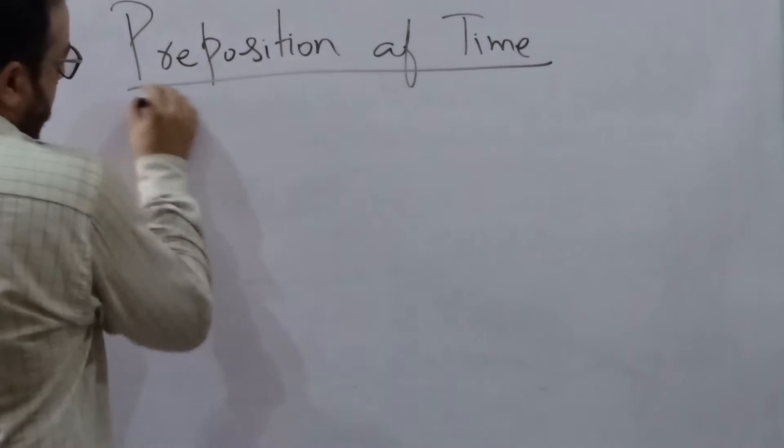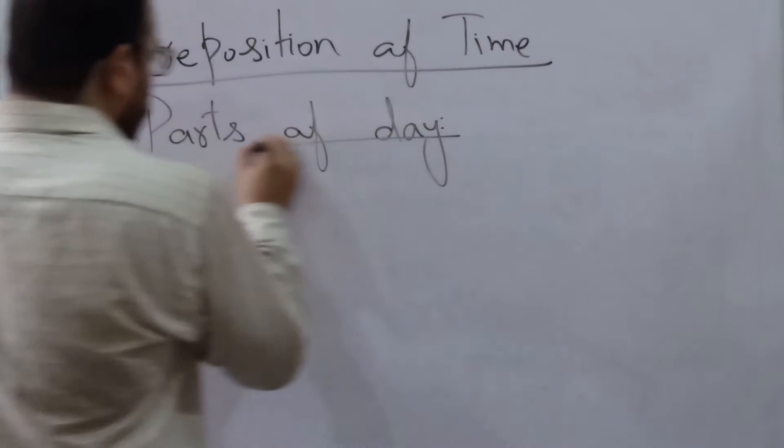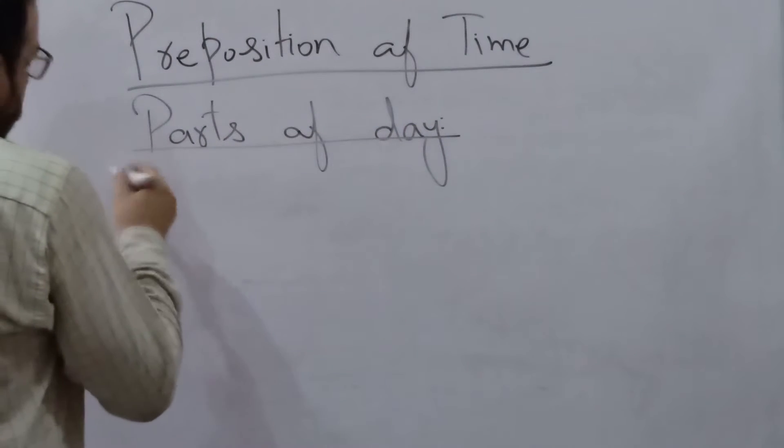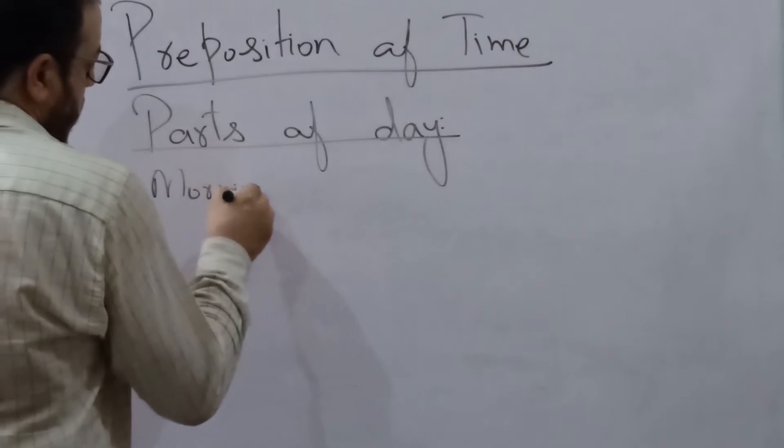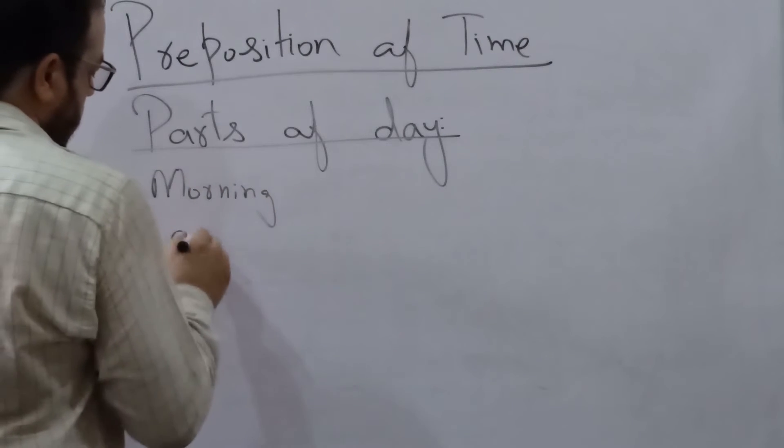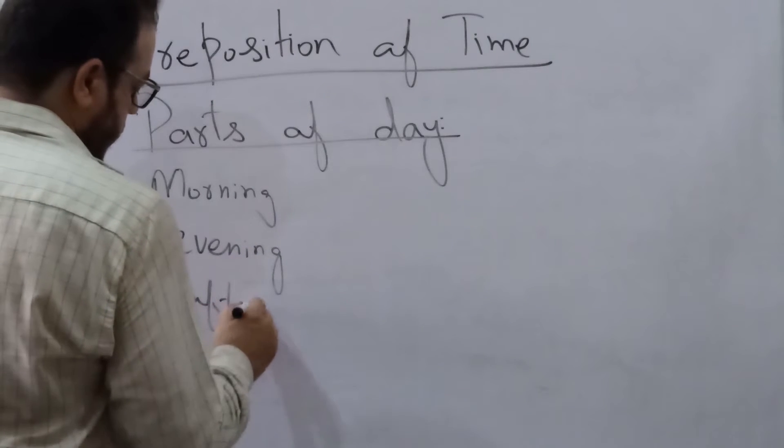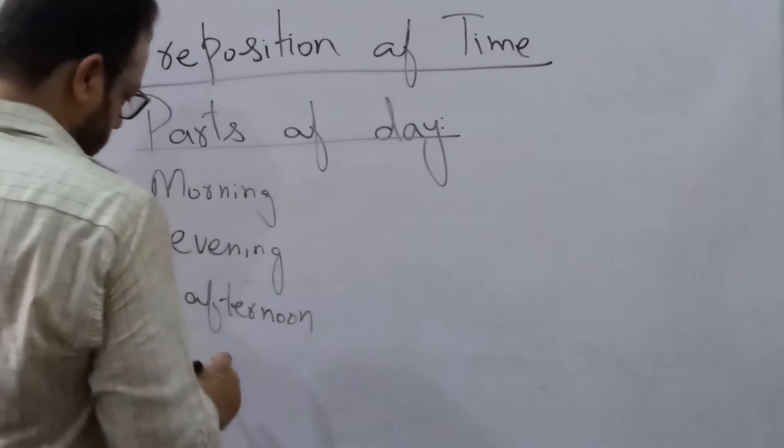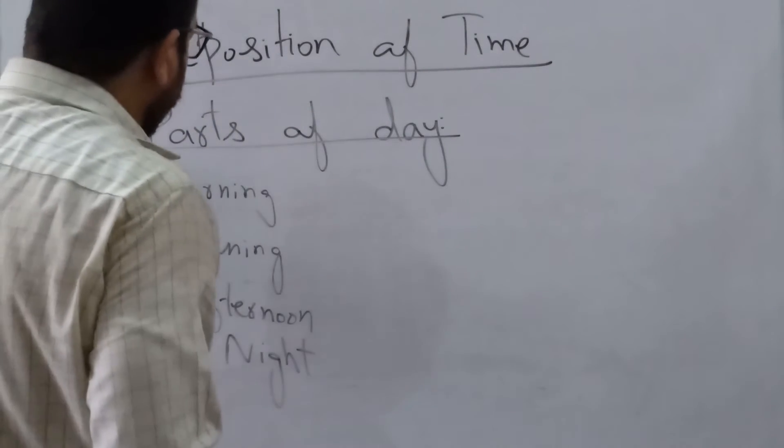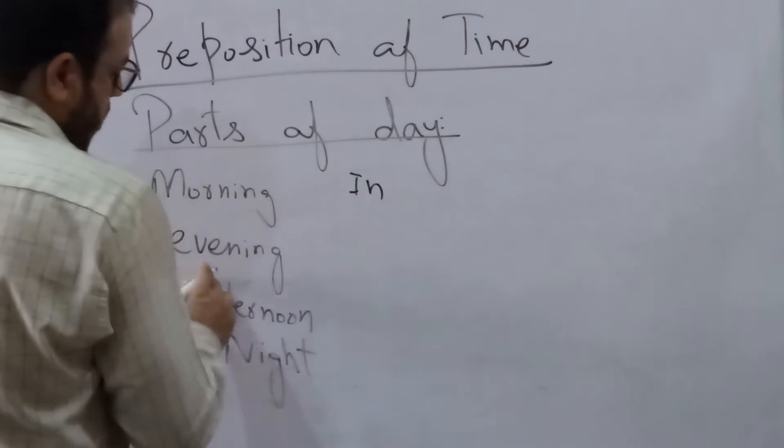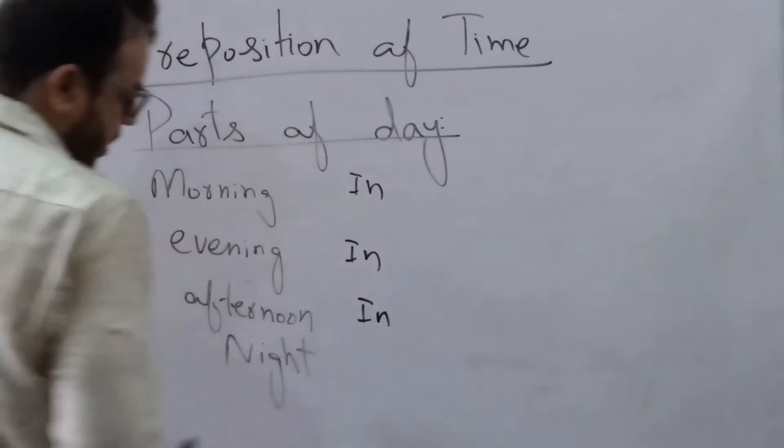We have parts of day: morning, evening, afternoon, and night. Parts of day: in the morning, in the evening, in the afternoon, and at night.